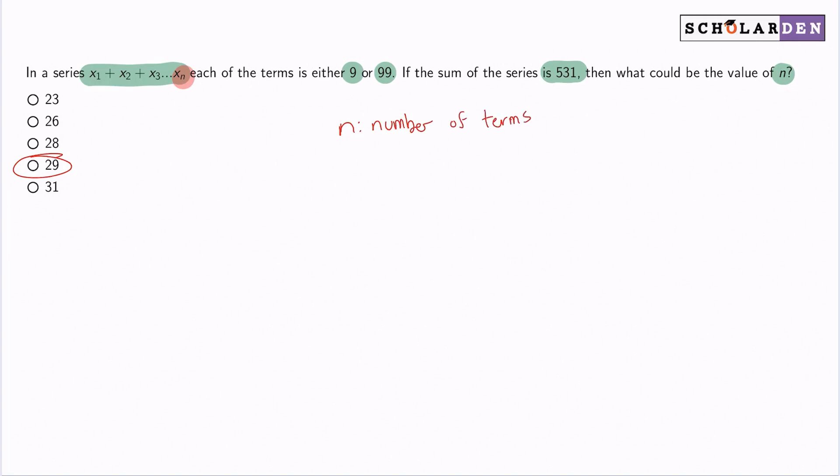So the only question is, how do we get the number of terms? And remember, when you start the problem off, remember to always identify what the goal is, which is what I did. Now we need to think about how we get to our goal. The biggest key here is that every number is 9 or 99, and they all add up to 531.